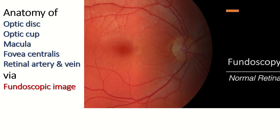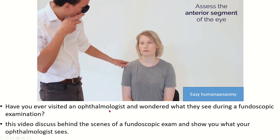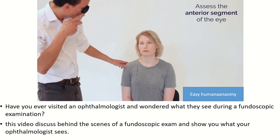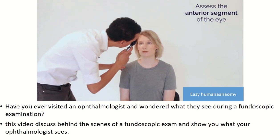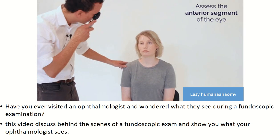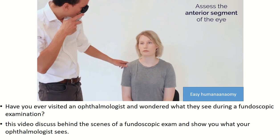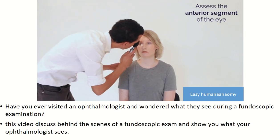Assalamualaikum, welcome all to the Easy Human Anatomy channel. In this video I discuss the anatomy of the optic disc, optic cup, macula, fovea centralis, retinal artery, and retinal vein via ophthalmoscopic image. Have you ever visited an ophthalmologist and wondered what they see during an ophthalmoscopic examination? This video discusses the behind-the-scenes of an ophthalmoscopic exam and shows you what your ophthalmologist sees.